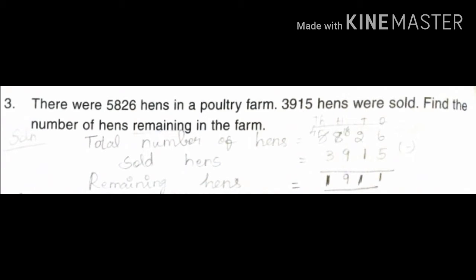So what is the meaning of the sum? In one poultry farm there are 5,826 cans. 3,915 cans were sold. Find the number of cans remaining in the farm — what is the remaining? First, write the solution and then write the steps. Total number of cans equals 5,826.